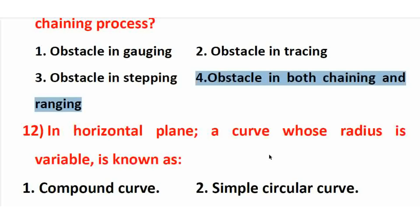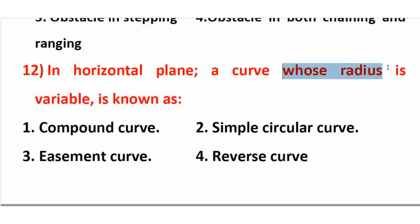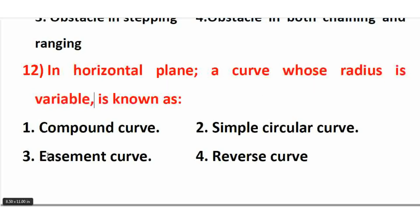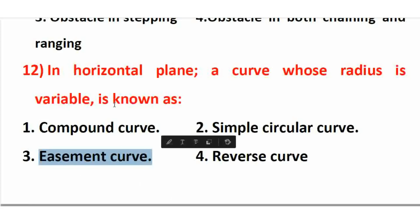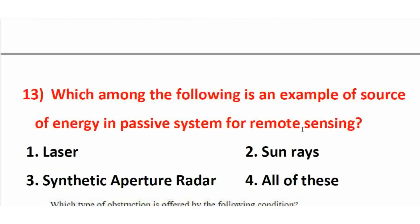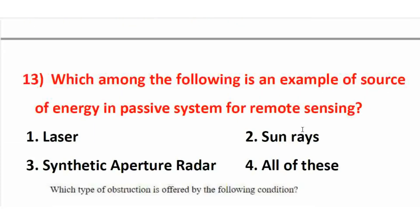In a horizontal plane, a curve whose radius is variable is known as a transition curve. The right answer is option 3. A transition curve is also known as an easement curve — a curve of varying radius connecting a straight line and a circular curve.